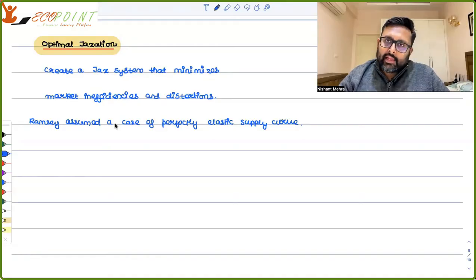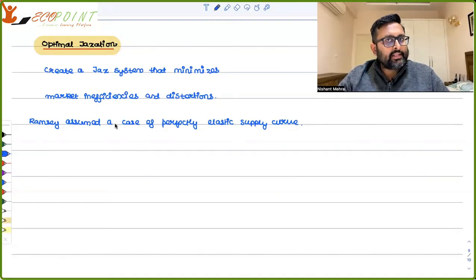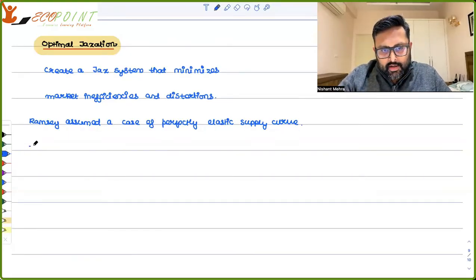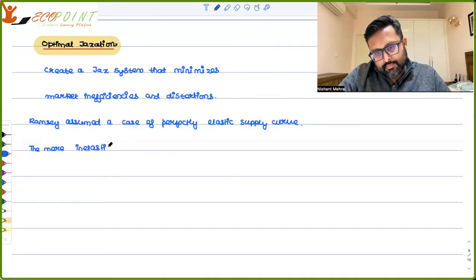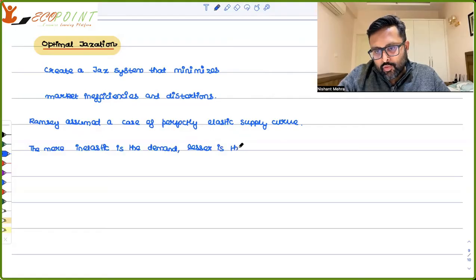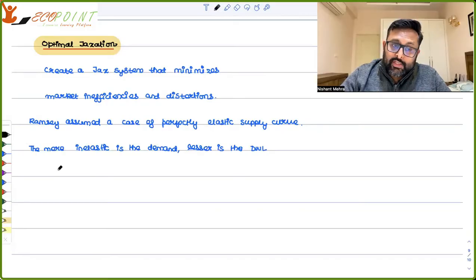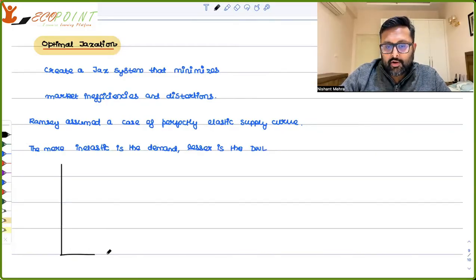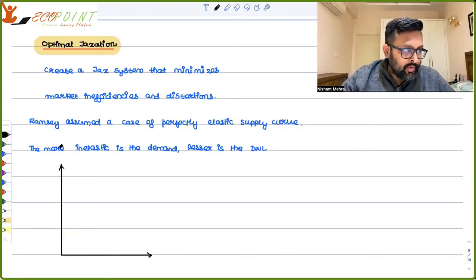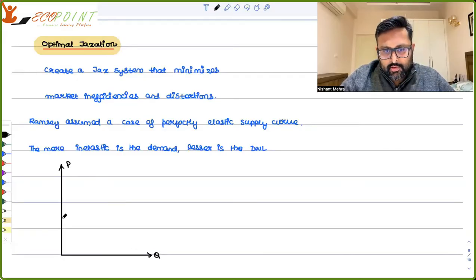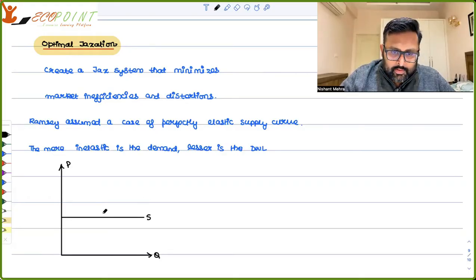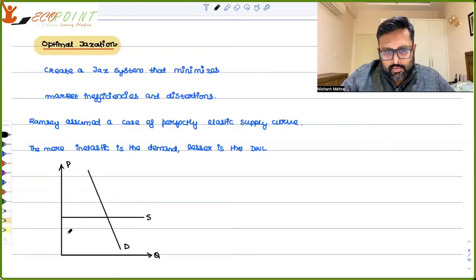In this case, the more inelastic the demand, the lesser is the deadweight loss. I have told you this in the deadweight loss recording as well — the more inelastic is the demand or supply, the lesser is going to be the deadweight loss, because there is going to be less change in quantity. So here on the graph, you have P on the y-axis and Q on the x-axis. This is the supply curve, and this is the demand curve. The price charged is this.